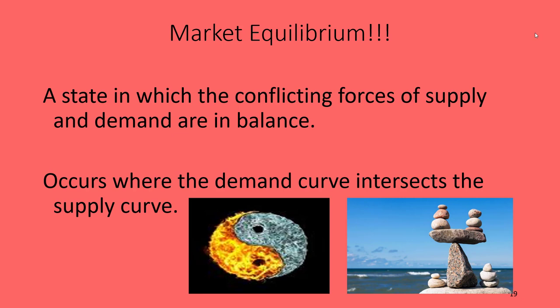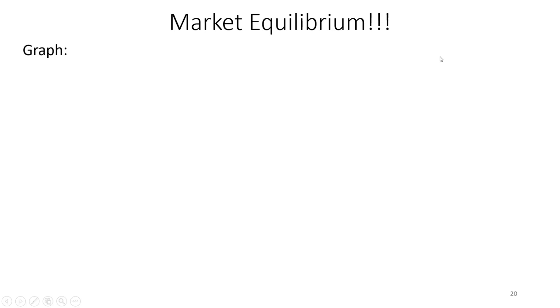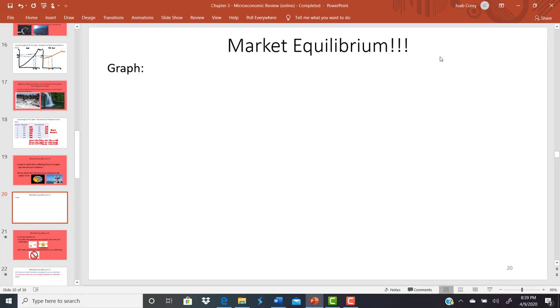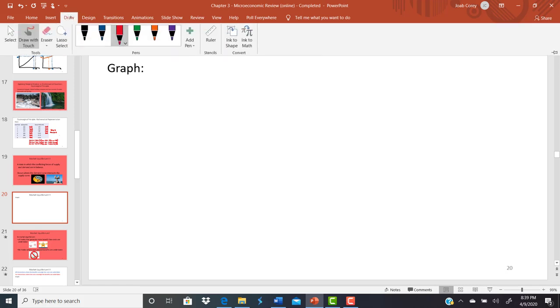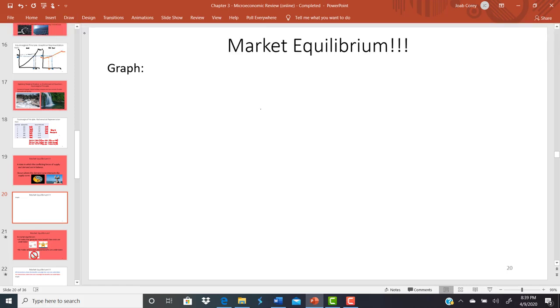Market equilibrium occurs where the demand curve intersects the supply curve. Let's go ahead and draw out that graph. If you've had Econ 3, I'm sure you've seen it many times before. And if you haven't, don't worry — we're going to go through it as if you haven't seen it.